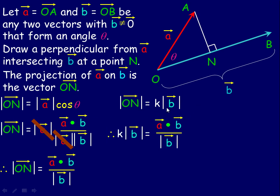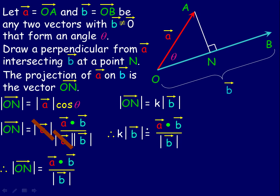The length of ON is some multiple k of the length of vector b. Setting k · |b| equal to the expression for |ON|, and dividing both sides by |b|, the |b| terms cancel on the right but the denominator becomes |b| squared. So k = (a · b) / |b|².